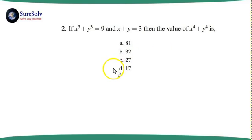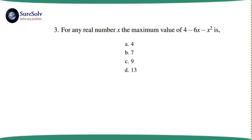The third problem is a different kind of problem — a maximization problem. We have to find the maximum value of the quadratic expression 4 - 6x - x². The key insight is: whenever you are asked to find the maximum value of a quadratic expression in x, the sign of x² will be negative; whenever you are asked to find the minimum, the sign of x² will be positive.